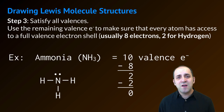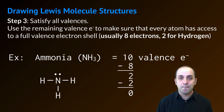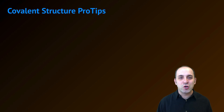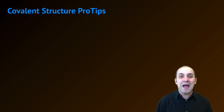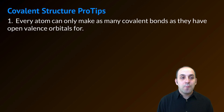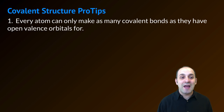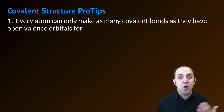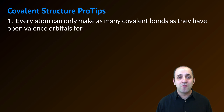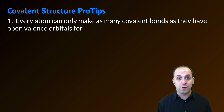Does this make sense? If it doesn't, take a moment and write down any questions that you have. There are a couple of covalent structure pro tips that I'm going to pass on to you, coming from my history of drawing covalent structures and dealing with students who run into the same kinds of issues year after year. Pro tip number one is that every atom can only make as many covalent bonds as they have open valence orbitals for. It's a good idea to remember that so that you don't wind up drawing an oxygen atom making three covalent bonds, for instance.